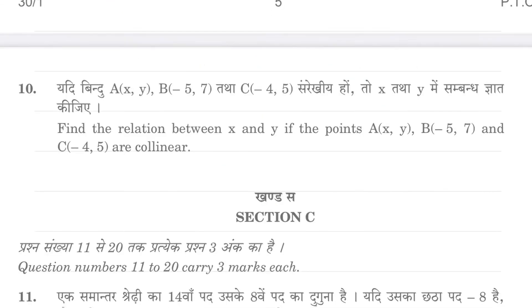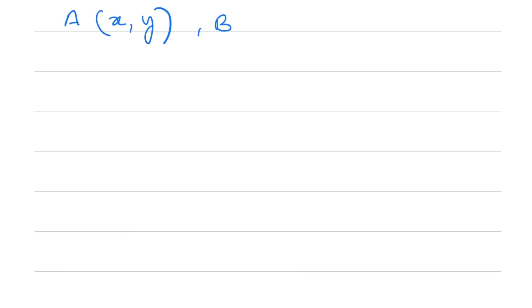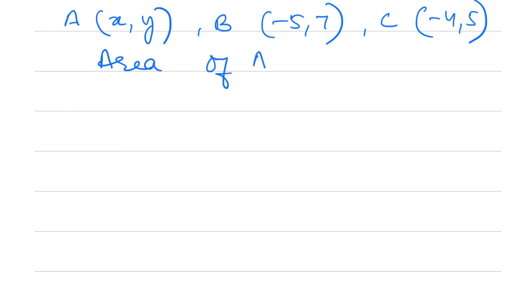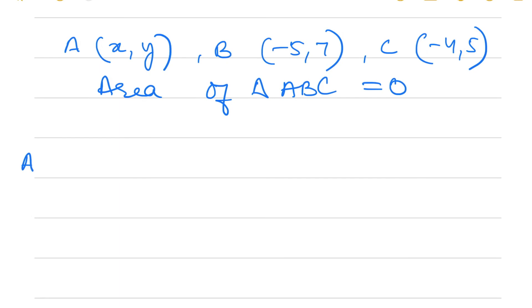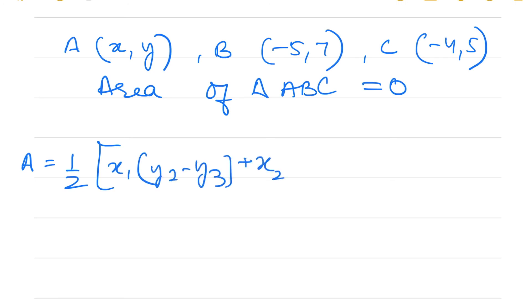Question 10: We are given 3 points A(x,y), B(−5,7), and C(−4,5) which are collinear. We have to find the relation between x and y. Since the three points are collinear, the area of triangle ABC = 0. Using the area formula: half × |x1(y2−y3) + x2(y3−y1) + x3(y1−y2)| = 0.